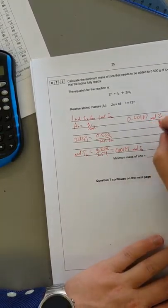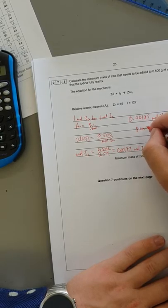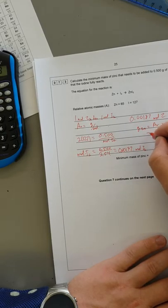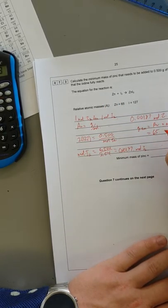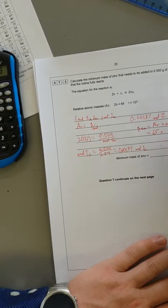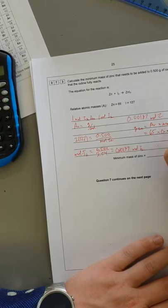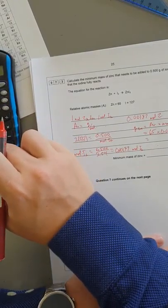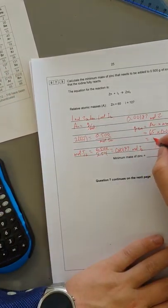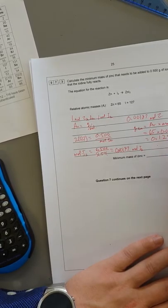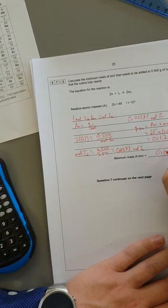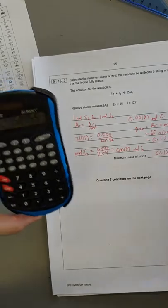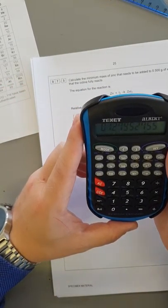Grams of zinc is equal to AR times moles. So zinc is just one thing, so it's 65 times 0.00197, and I get 0.128 grams. So that's just to the right number of significant figures. The actual number I get is 0.127952755.